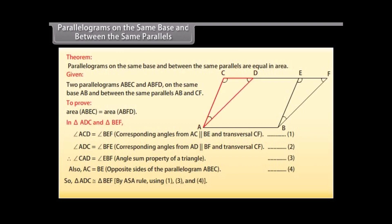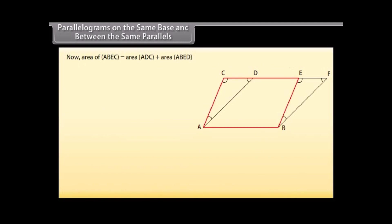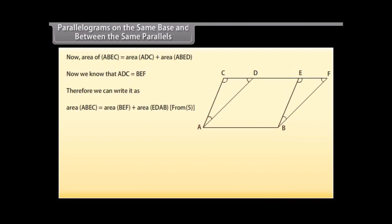So, triangle ADC is congruent to triangle BEF by ASA rule using 1, 3, and 4. Therefore, area of ADC is equal to area of BEF because congruent figures have equal areas — mark it as 5. Now, area of ABEC is equal to area ADC plus area ABED. We know that ADC is equal to BEF. Therefore, area ABEC is equal to area BEF plus area EDAB from 5, which is equal to area ABFD. So, parallelograms ABEC and ABFD are equal in area.